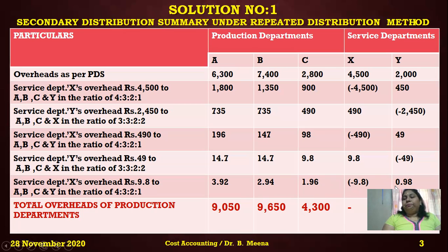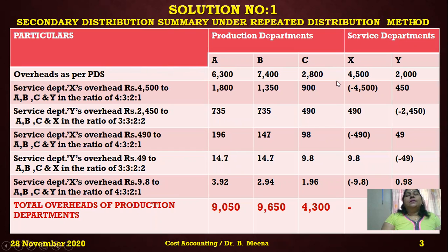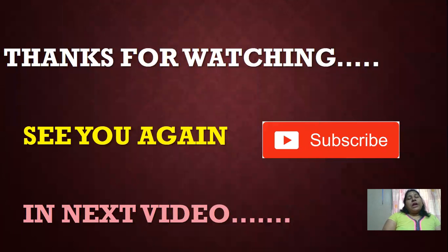Now I stop redistributing because the service department column has reached effectively zero. Once zero is reached, total the production departments — that is the answer for total overheads of production departments under the repeated distribution method. The key feature of this method is that service department overheads are redistributed among all departments, both production and service, until the service department column reaches zero. Thanks for watching — subscribe, click the bell button, and see you in the next video!